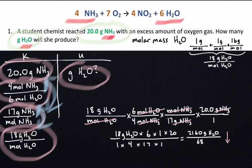This is now a division problem because there's a number on the bottom. So we type this into our calculator. Moving from the top down, 2160 divided by 68 is equal to 31.8 grams H2O.